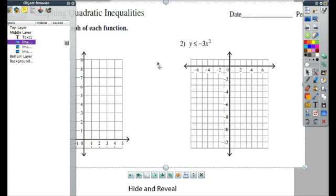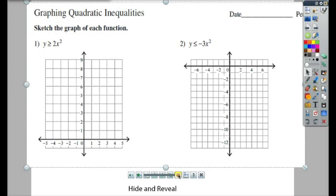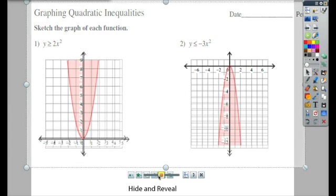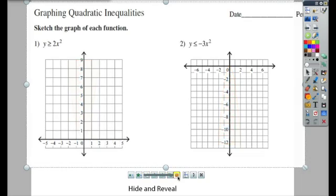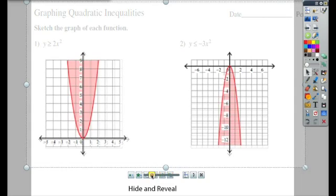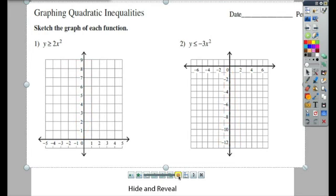And what I'm actually going to do is I'm just going to change the transparency of this top layer. So as I make the top layer see-through, I can see the answers below it. So transparency or layering is one way that you can hide and reveal.